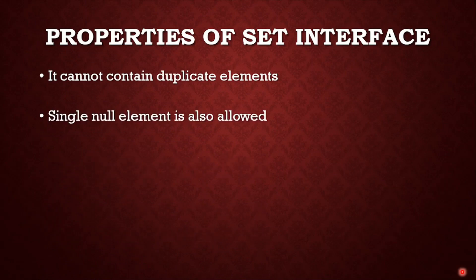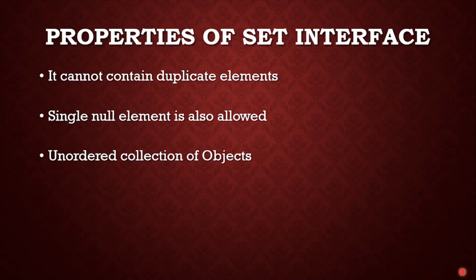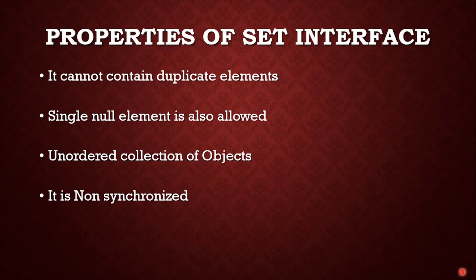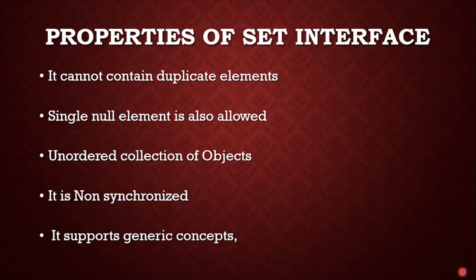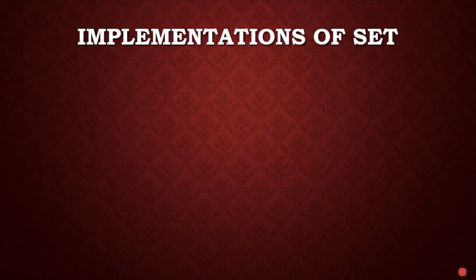Let's see few properties of Set. It cannot contain duplicate elements. A single null element is allowed in case of Set interface. It is an unordered collection of objects, meaning no order is maintained. However, SortedSet does perform sorting internally, which we will discuss later. It is a non-synchronized collection, so in a multi-threaded environment we have to synchronize it externally. It also supports generics, so we can define what type of data we want to store to make it type-safe.